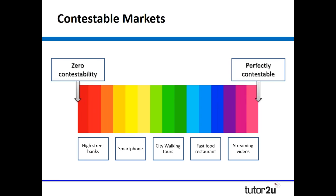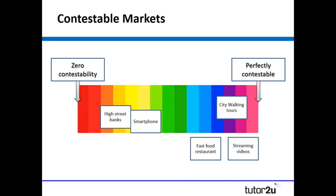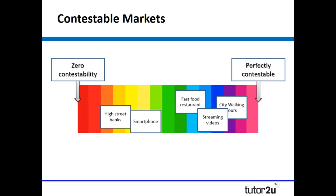Back to our spectrum at the end — we asked students to place five businesses on it before the tasks. Now that they know more about contestability and the other factors, where would they put those businesses? I suspect they'll maintain high street banks as relatively incontestable, and smartphones likewise due to technology costs. City walking tours are relatively contestable with very few sunk costs. Fast food restaurants may have slightly lower consumer loyalty. Streaming video services have very little consumer loyalty — people choose based on quality and will switch between providers.